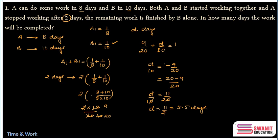The total time taken is 5.5 plus the two days both worked together, giving 7.5 days as the final answer. But this is a lengthy method. Let's now go with the total work method approach.